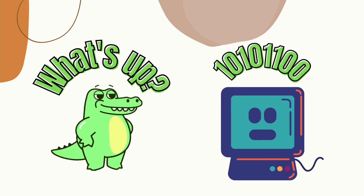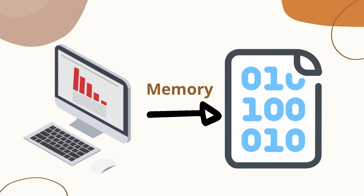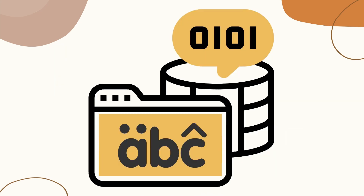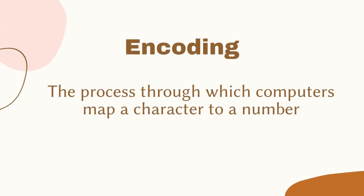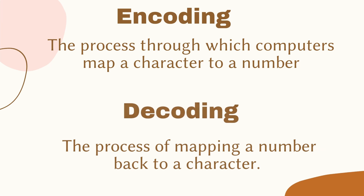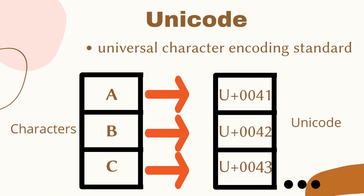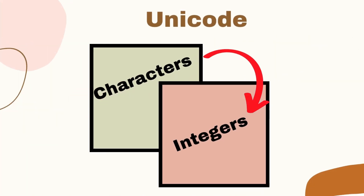The second part of the definition is that strings represent Unicode characters. Computers do not understand any language or character — they only understand bits. Even though you see a character on your screen, internally it is stored as a sequence of zeros and ones. The process through which computers map a character to a number is called encoding, while mapping a number back to a character is decoding. Unicode is a universal character encoding standard that lists every character used by human languages and gives each character its own unique code.